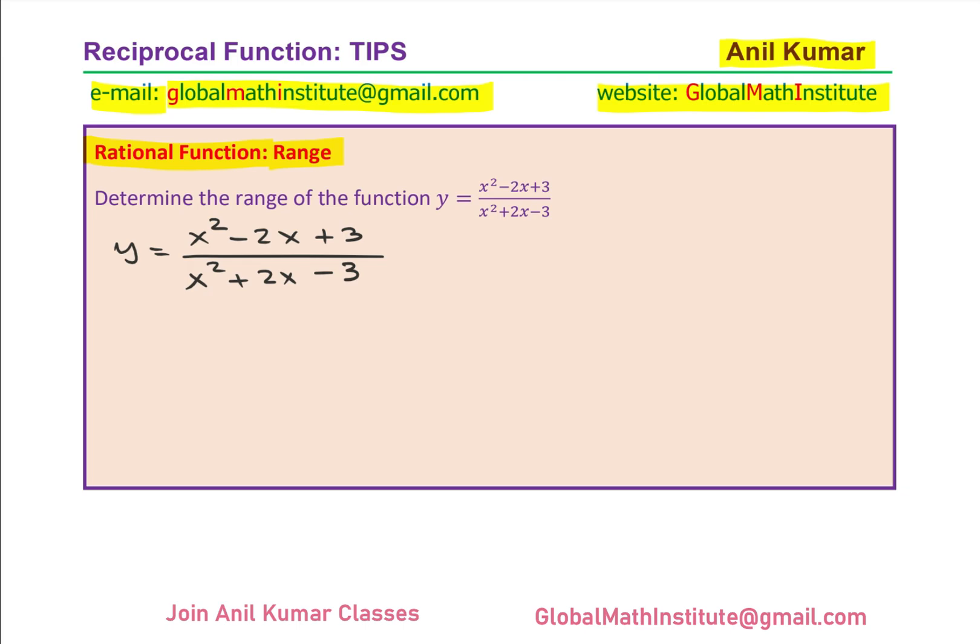So we are going to multiply with y the denominator which is x square plus 2x minus 3 and so we get our equation as on the right hand side. We are left with x square minus 2x plus 3. Bringing all the terms together, we can rewrite this as x square plus 2x minus 3 minus x square plus 2x minus 3 equals to 0.